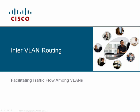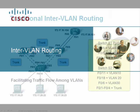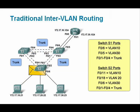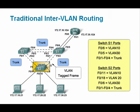This video will help you understand the different methods used to facilitate traffic flow from one VLAN to another in a network. InterVLAN routing is the process of forwarding traffic from one VLAN to another, and this process requires a router.